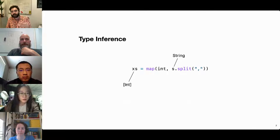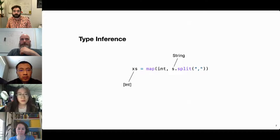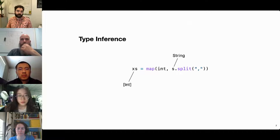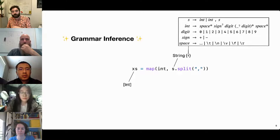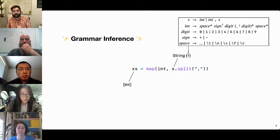Types have one significant advantage over grammars: most type systems offer some form of type inference, allowing programmers to generally omit type annotations because they can usually be automatically recovered from context. What if that was possible to also do for grammars? What if we could infer grammars just like we can infer types? This is exactly what we want to do in our work.